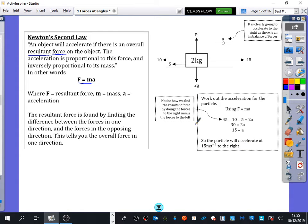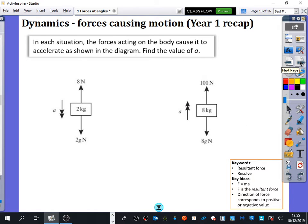And I said here, notice how we find the resultant force by doing the forces to the right minus the forces to the left. So we'll just do this from a quick bit of year 12 recap. It says here, in each situation, the forces acting on the body cause it to accelerate as shown in the diagram. Find the value of A.